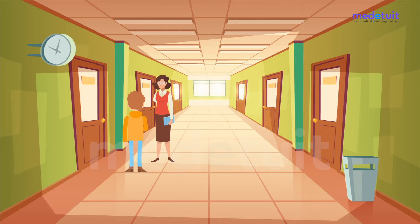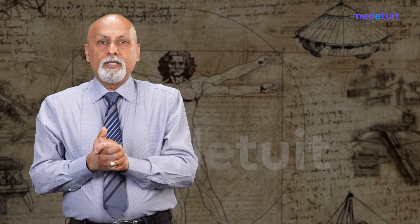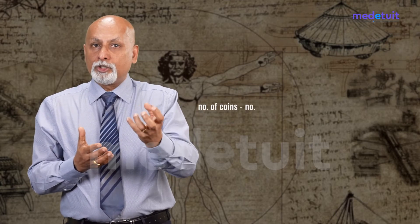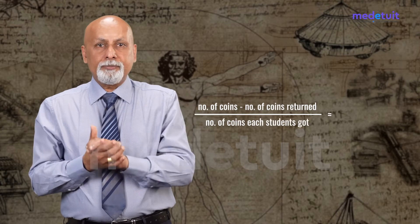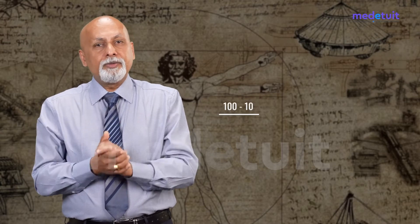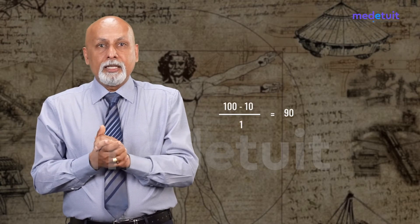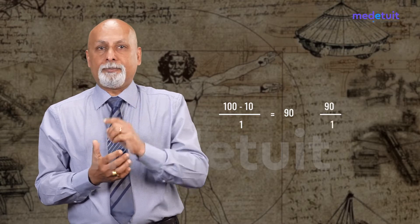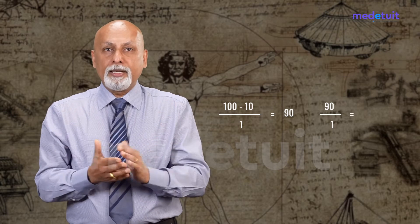The teacher calls one of the students who received a coin and asks how many coins they got in the distribution. The student answers that he got only one. The teacher then applies the formula: he took 100 coins into the room, came back with 10 left out, so he subtracted 10 from 100 to get 90, then divided by the number of coins each student got, which is one.